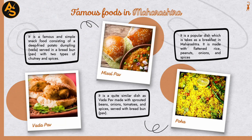Famous Foods in Maharashtra. Vada Pav is a famous and simple snack consisting of a deep-fried potato dumpling served in a bread bun with two types of chutney and spices. Misal Pav is a similar dish made with sprouted beans, onions, tomatoes, and spices served with a bread bun. Poha is a popular breakfast dish made with flattened rice, peanuts, onions, and spices.